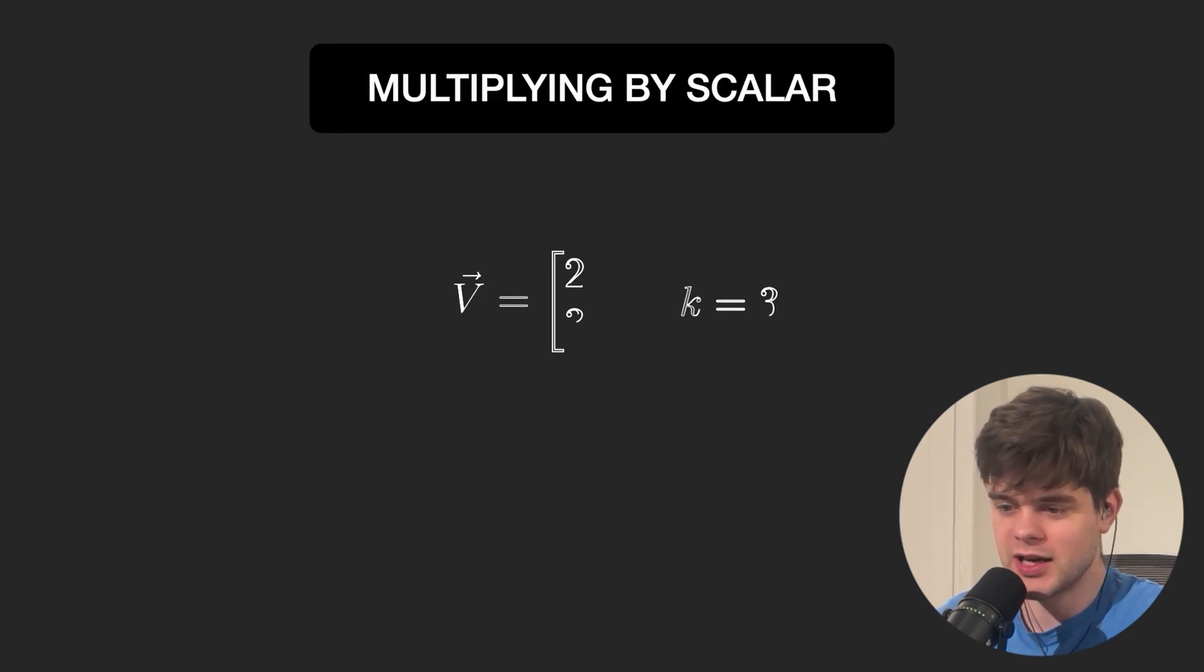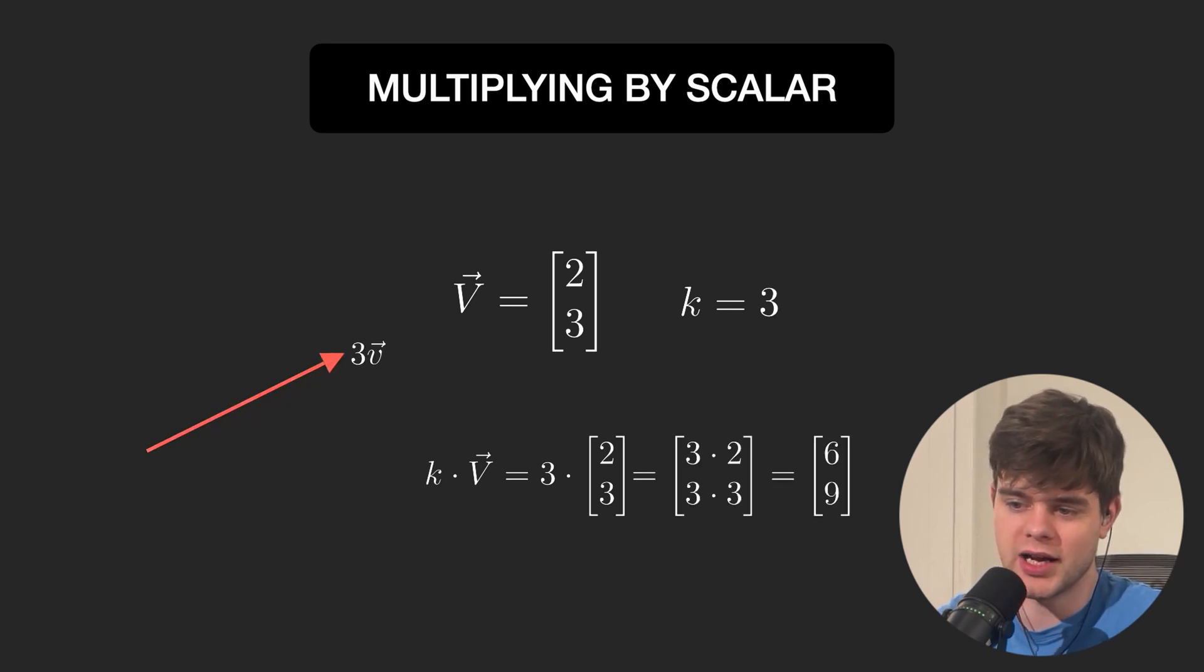Next, we have vector-scalar multiplication, and that simply means we can multiply or divide a vector by a number. This is done by multiplying or dividing each component of the vector by a scalar.